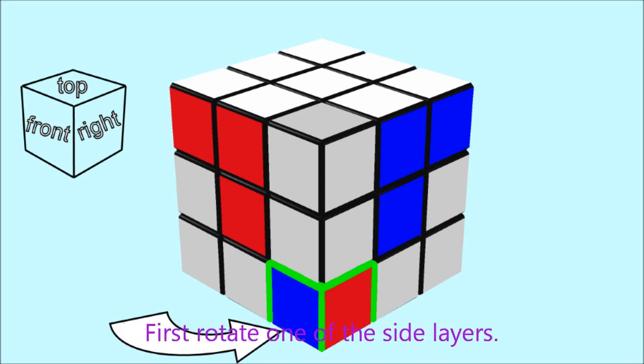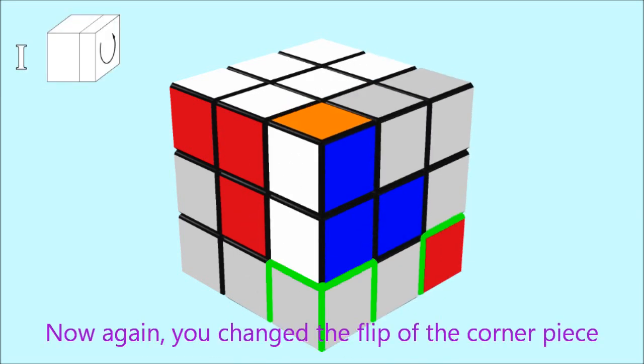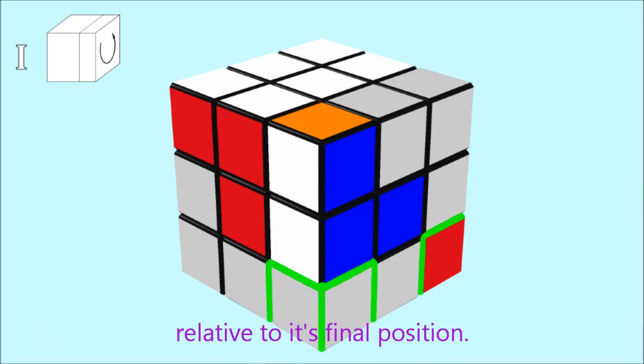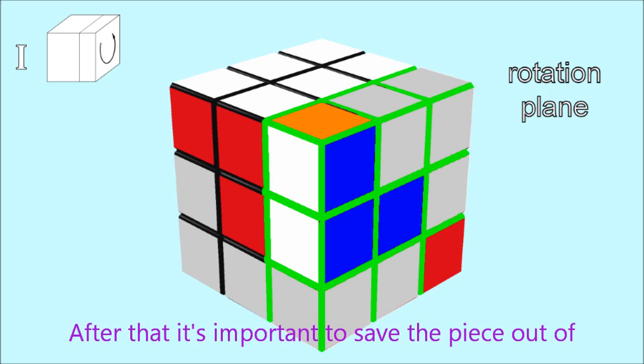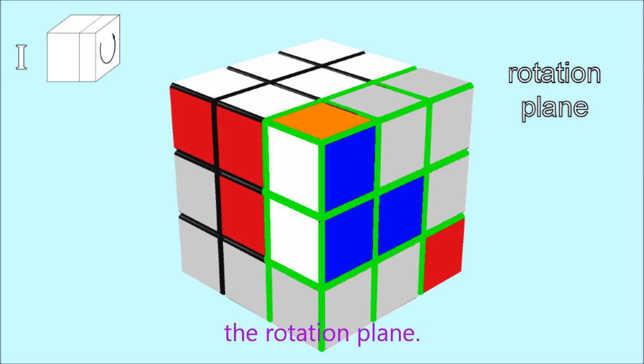First rotate one of the side layers. I will use the right layer. Now again, you change the flip of the corner piece relative to its final position. After that, it's important to save the piece out of the rotation plane.